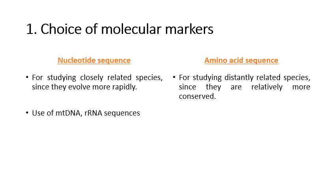For nucleotide sequences, you can use mitochondrial DNA sequences or ribosomal RNA sequences. If you are studying closely related individuals, like different individuals of the same population, you can use mitochondrial DNA sequences because they evolve more rapidly. But if you are studying distantly related species — such as mouse and humans — and still want to stick to nucleotide sequences, you can use ribosomal RNA sequences because there is a strong selection pressure on these sequences and they tend to evolve slowly compared to mitochondrial DNA.